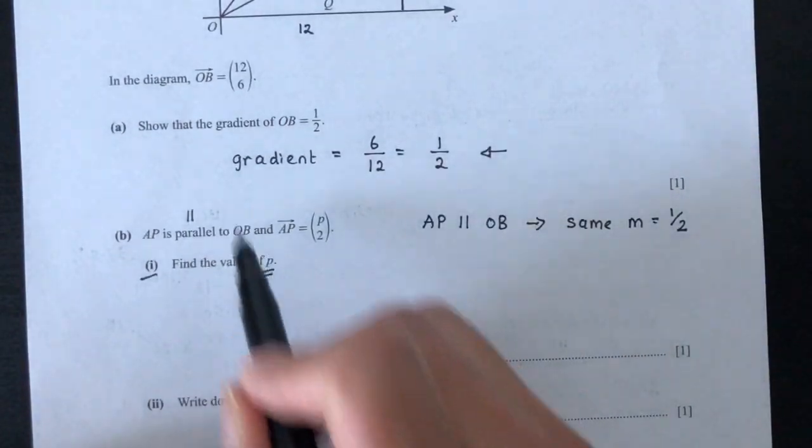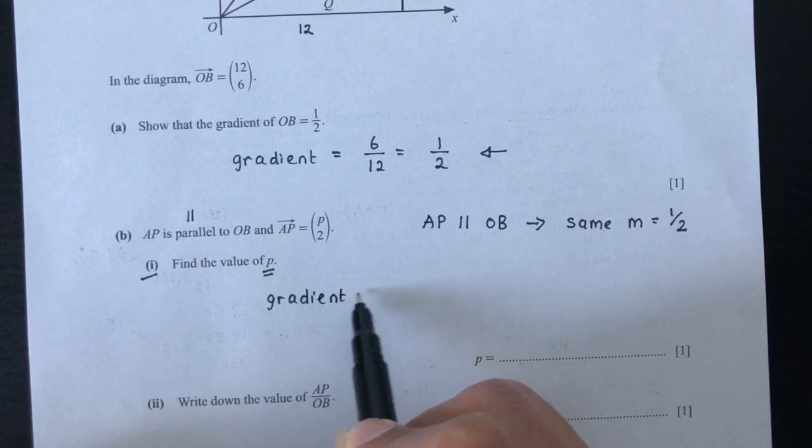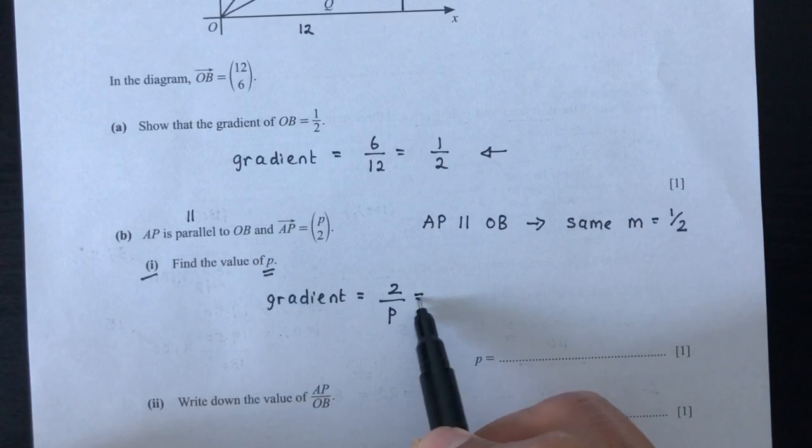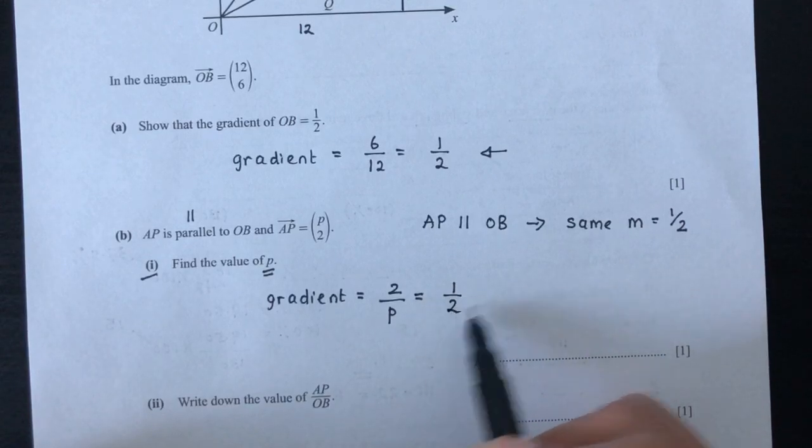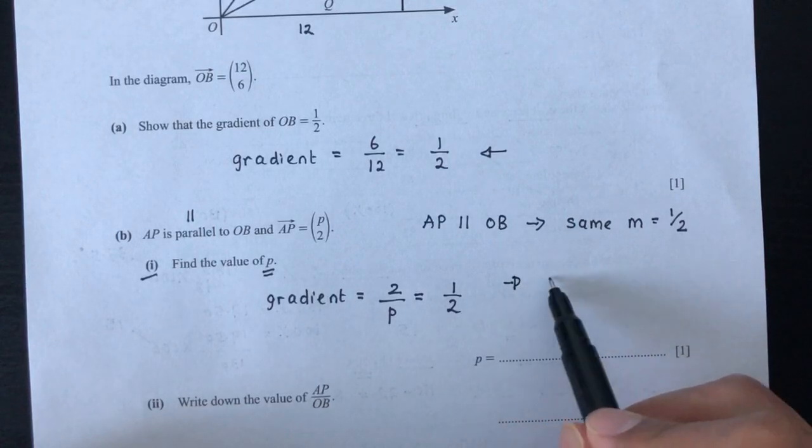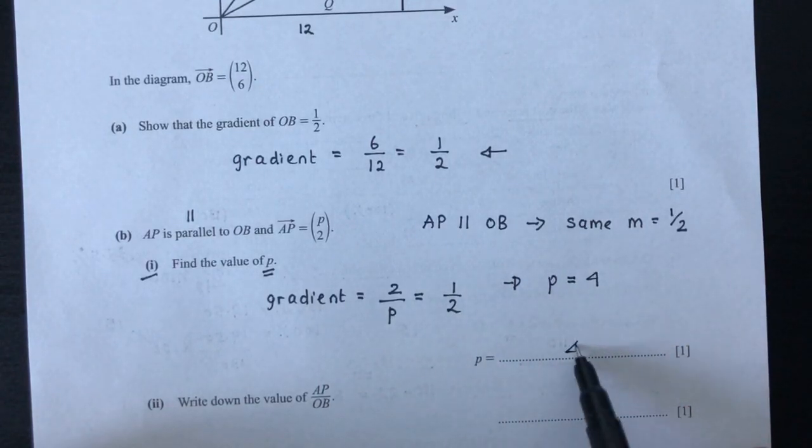So how do you find gradient again, as we have seen from part 1? Gradient is equal to the height of the triangle, which is 2, divided by the base. This P is supposed to give you the gradient, which is half. Now solve to find the value of P. You will see that P is equal to 4. That is part 1.